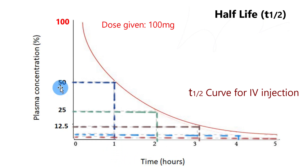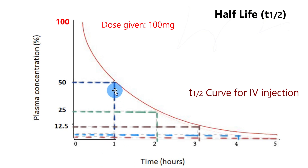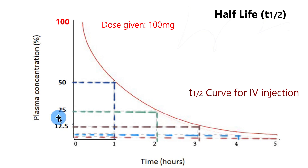...there will be 50 milligrams of the drug left in the plasma, or it will be 50% available. This means one half-life has elapsed and we have 50 milligrams remaining. After one more hour — two hours in total — we will have 25 milligrams, or 25% of the drug, available in the plasma.